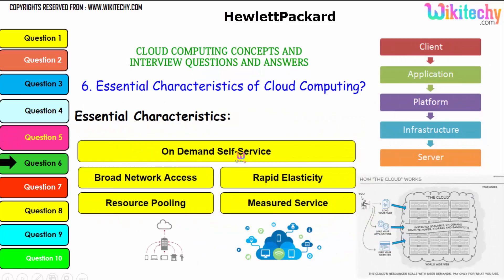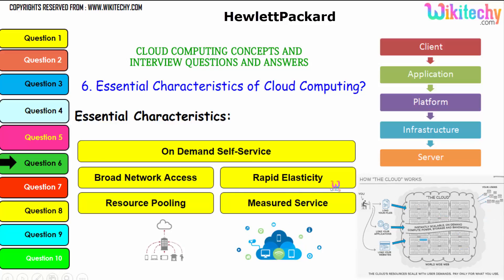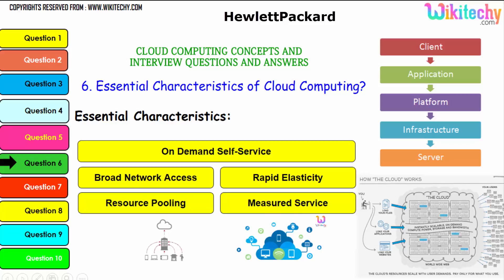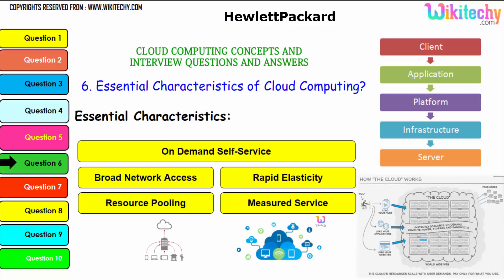Further essential characteristics: on-demand self-service — you can get service whenever you want. Broad network access — very wide network access available. Rapid elasticity — you can increase and reduce resources. Resource pooling — allocate as much resource as you need. Measured service — pay as you go, pay for what you use. These are the essential characteristics of cloud computing.